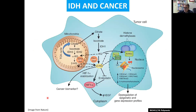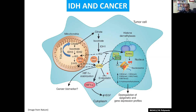How does 2-hydroxyglutarate cause cancer? The way it causes cancer is by changing gene expression. It changes the methylation status of histones and proteins, which in turn affects the expression of a variety of genes, and it is those changes in gene expression that cause cancer.